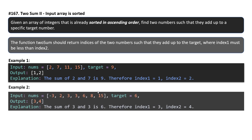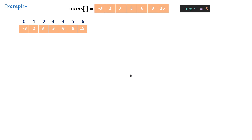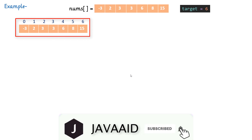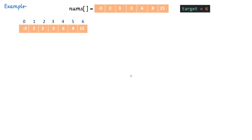Let's take another example: with this array and target 6, the output is [3, 4] because the sum of 3 and 3 is 6, so index 1 is 3 and index 2 is 4. Let's try to solve this problem. We'll take the same example with the nums array, target 6. We'll take two pointers: one at start and one at end. The start pointer is pointing to element -3 and the end is pointing to 15.